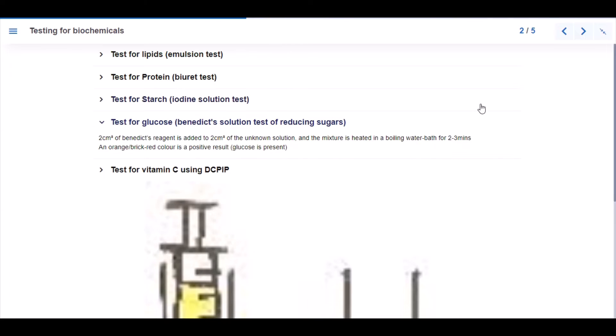To test for glucose, Benedict's solution test of reducing sugars is added to 2 cm³ of the unknown solution and the mixture is heated in a boiling water bath for two to three minutes. An orange or brick red color is a positive result and that shows that glucose is present.